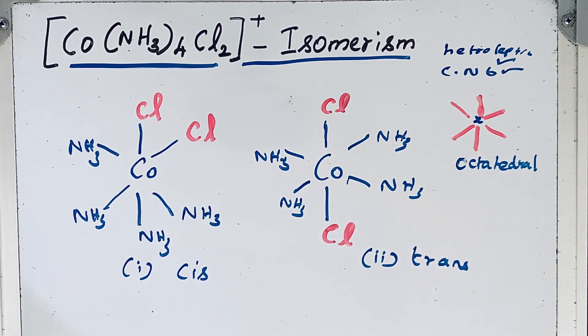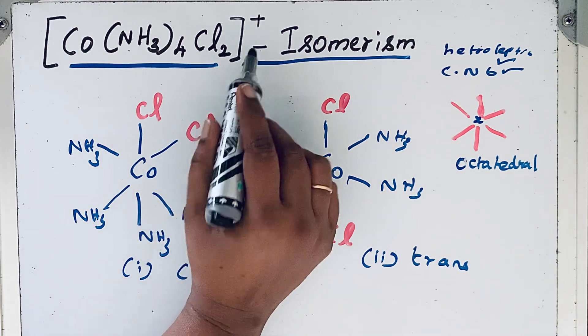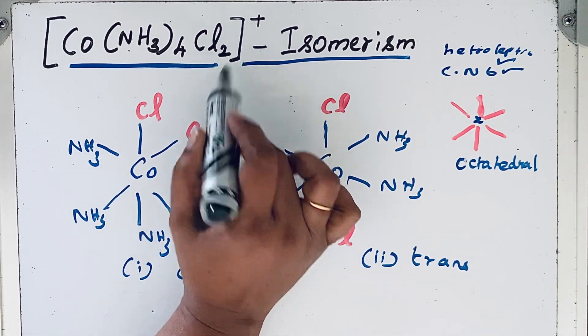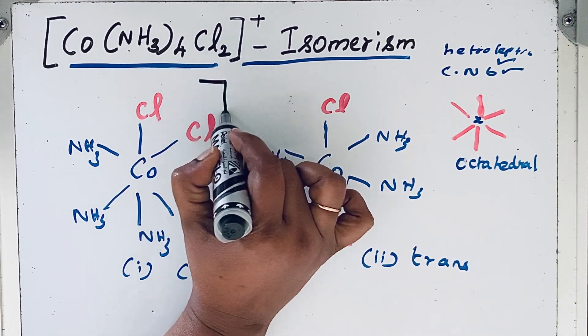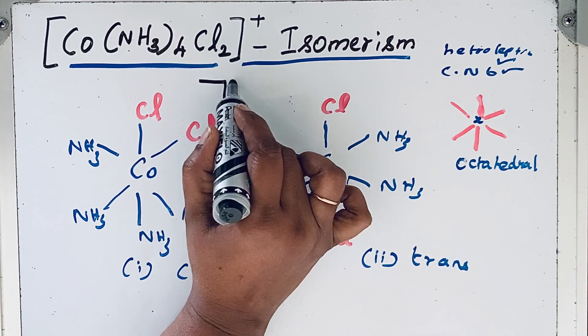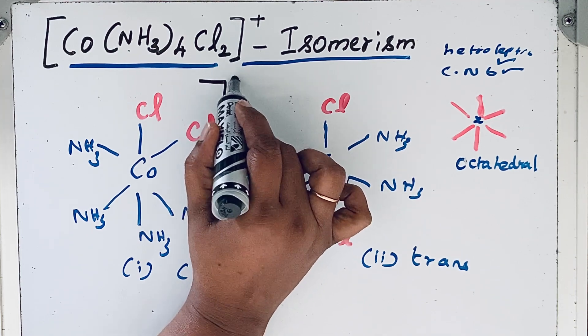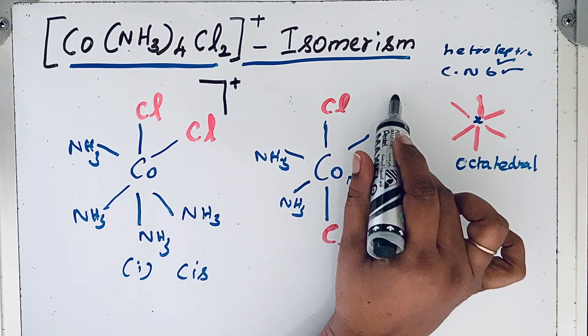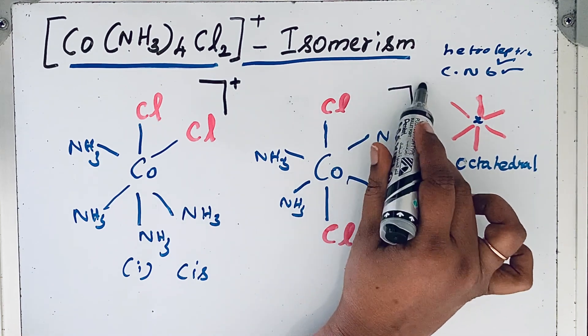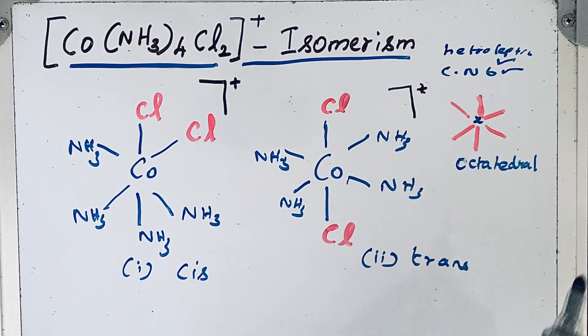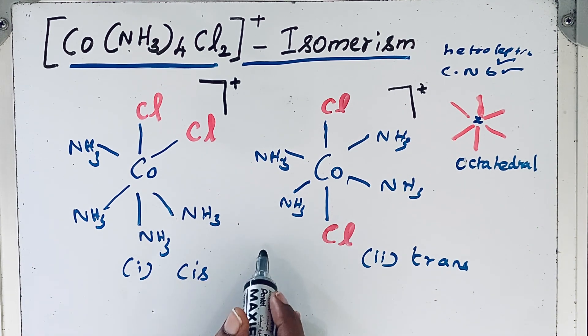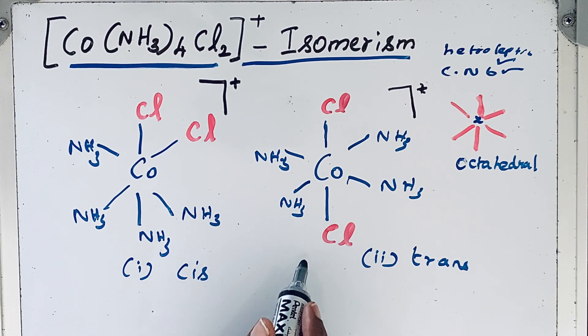Since this compound is an ion, we should show the charge. So by drawing like this, on the right hand side we are going to draw plus. The same way for this also, plus charge we should show this way. So this is the cis and trans isomers of Co(NH3)4Cl2 plus compound.